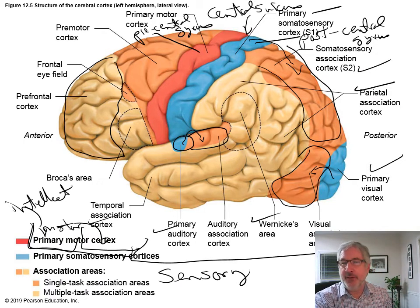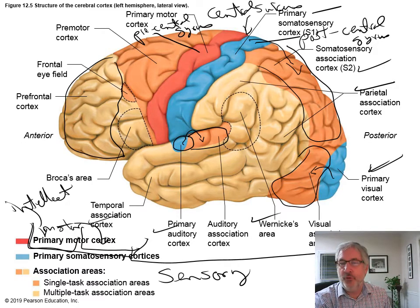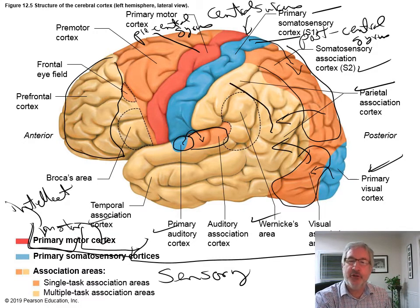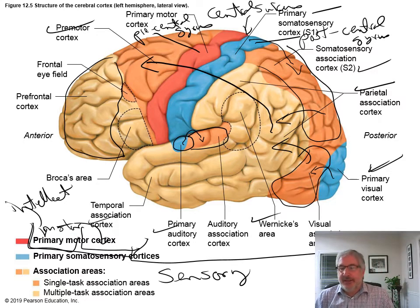What happens is you have information coming to the somatosensory cortex — say it goes over to the somatosensory area. You also have visual information from the primary cortex going over into the visual association area. Then that information will go into an association area, and it kind of decides what to do. Then you can send the information over to the premotor cortex, which then decides what to do with all that information.